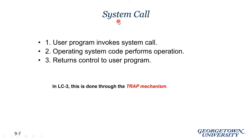How do system calls work? If you want to access an IO device or some other protected device, you do this not by directly accessing the device, but rather by making the appropriate call to the system's service routine. The user simply invokes a system call, the operating system takes over and performs the operation, and then hands control back to the user program.